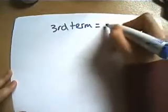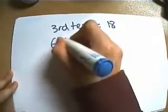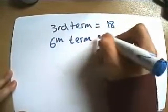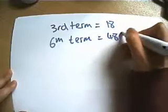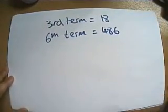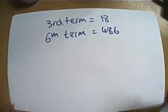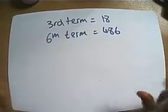Say you were told that the third term was 18 and the sixth term was 486, for instance. What can you find out about the geometric series from these two bits of information? Well, actually, you can find everything about it.